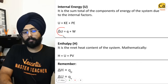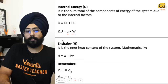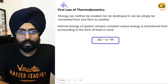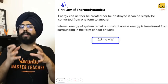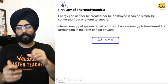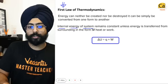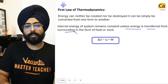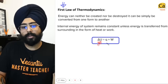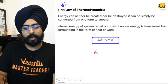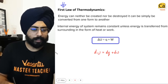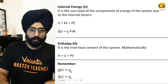The famous equation ΔU = Q + W is the mathematical equivalent of the first law of thermodynamics, which states that energy can neither be created nor destroyed — it can only be converted from one form to another. Mathematically for thermodynamics, the internal energy of a system remains constant unless energy is transferred from the surroundings in terms of heat or work. You can also write the differential form: dU = dQ + dW.